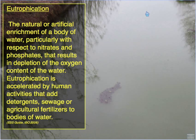This enrichment results in a depletion of oxygen content in the water. Eutrophication is accelerated by human activities that add detergents, sewage, or agricultural fertilizers to bodies of water. From the perspective of pollution, we focus by definition on the artificial enrichment — the human-induced sources of this nutrient enrichment.